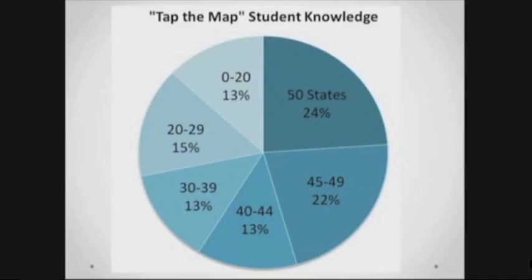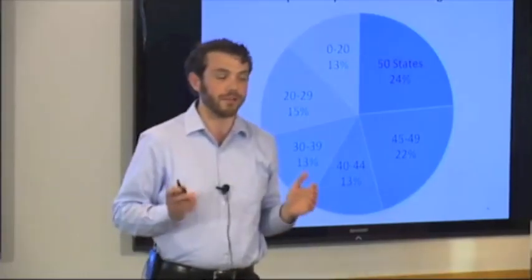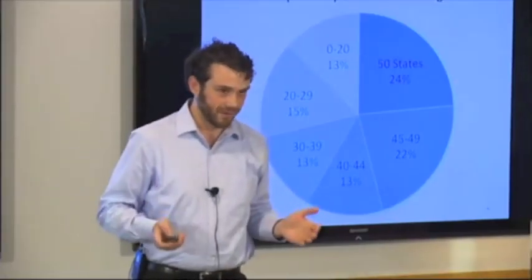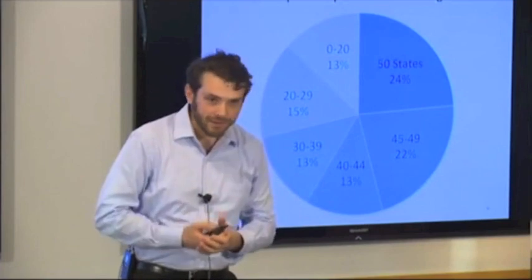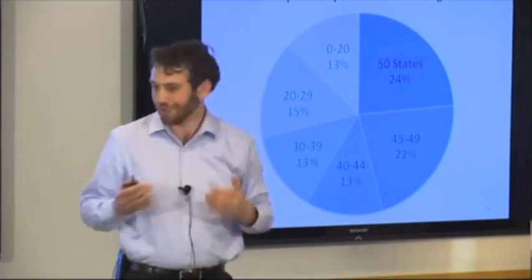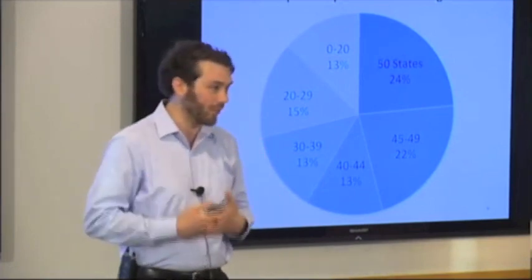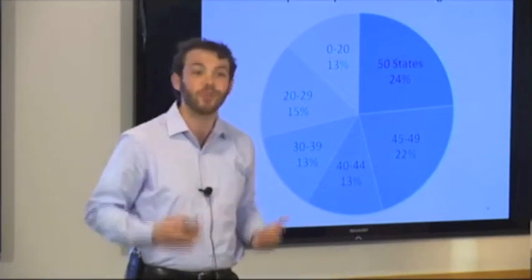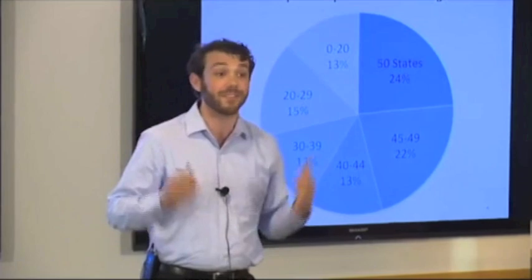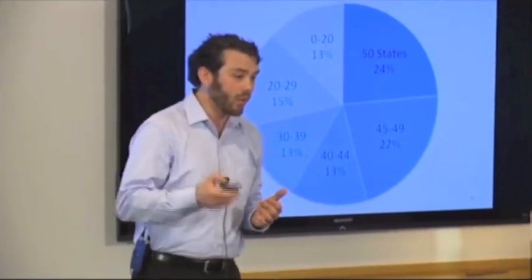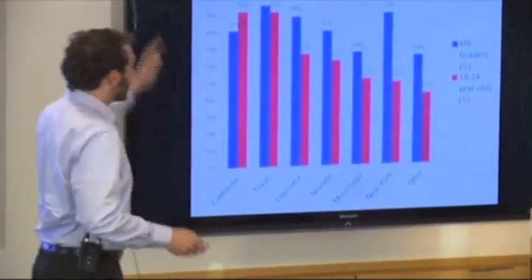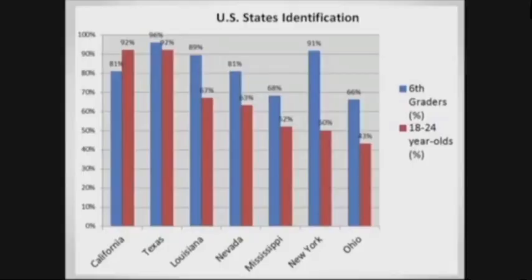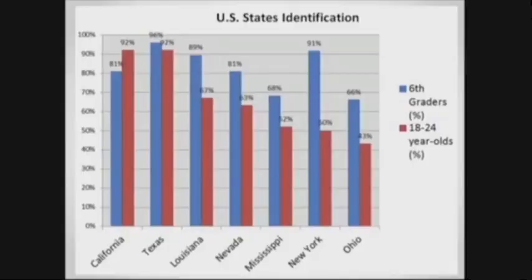But they also outperformed adults. In 2006, National Geographic did a survey of 18 to 24-year-olds and asked them to identify seven states on a blank map. With the exception of California, the 6th graders outperformed the 18 to 24-year-olds in every category.